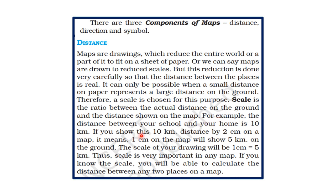For example, suppose the distance between your school and your home is 10 kilometers. If you show this 10-kilometer distance as 2 centimeters on a map, it means 1 centimeter on the map represents 5 kilometers on the ground. So the scale of your drawing will be 1 cm = 5 km. If you know the scale, you can calculate the distance between any two places on a map.